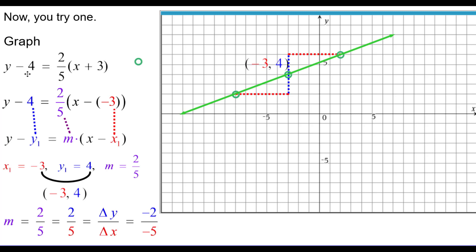So we rewrote the equation as y minus 4 equals 2 fifths times the quantity x minus negative 3. These are equivalent equations.